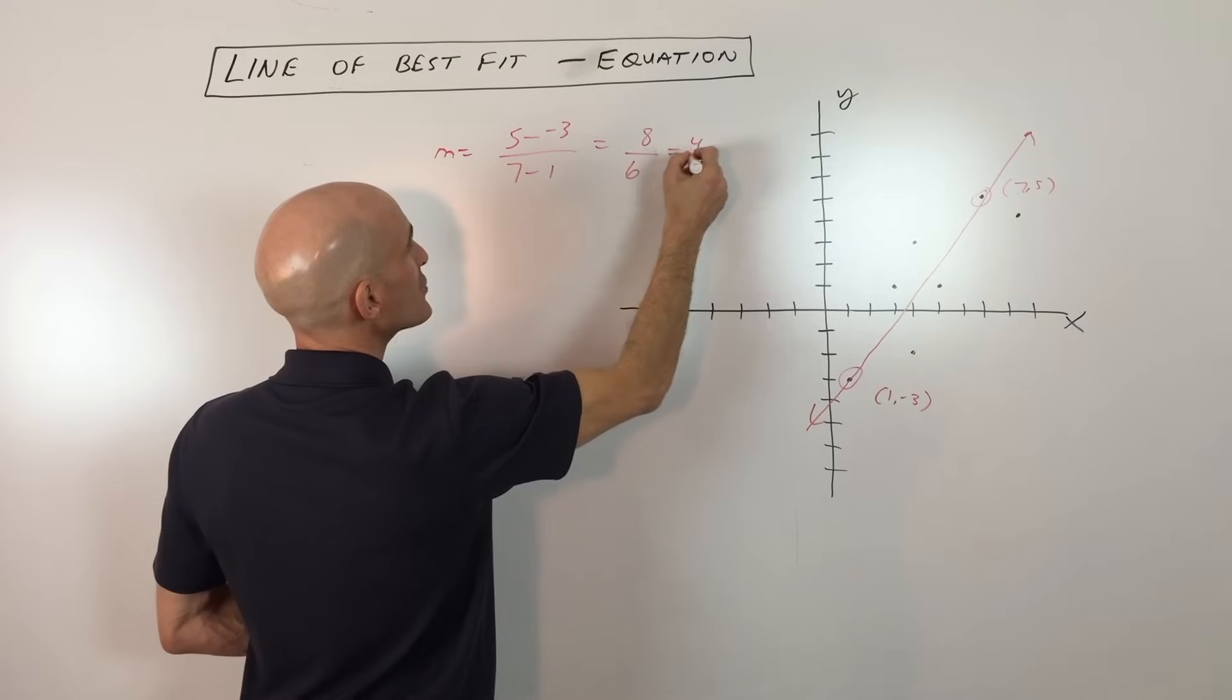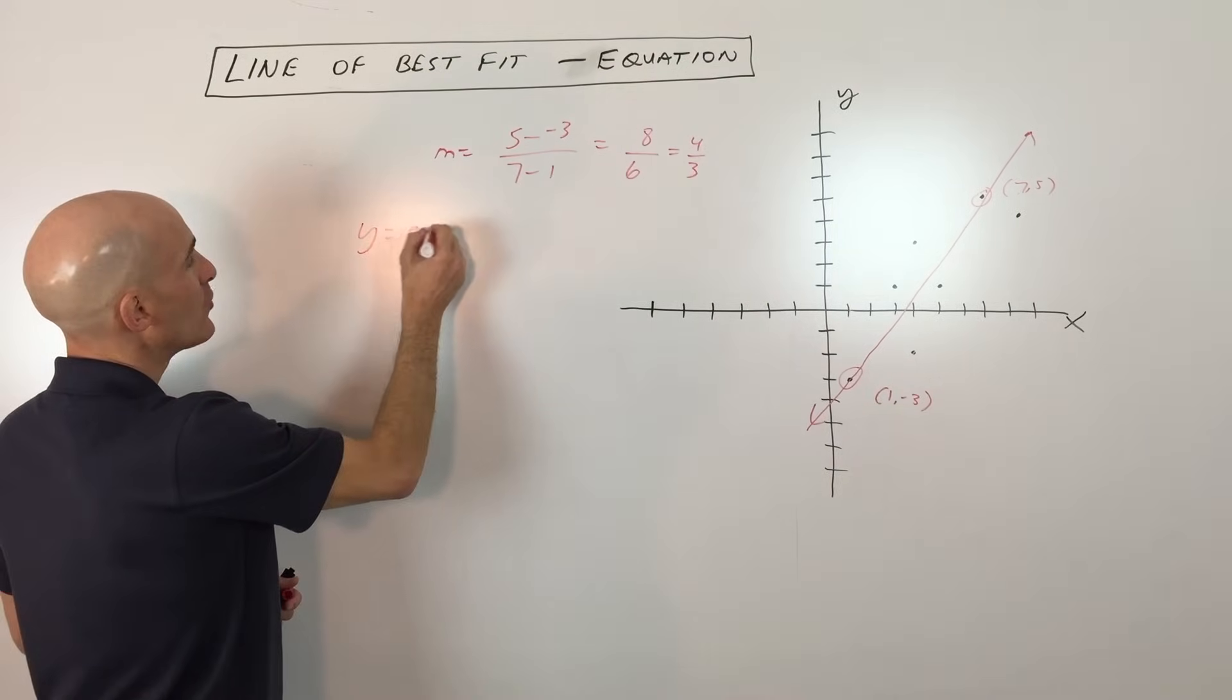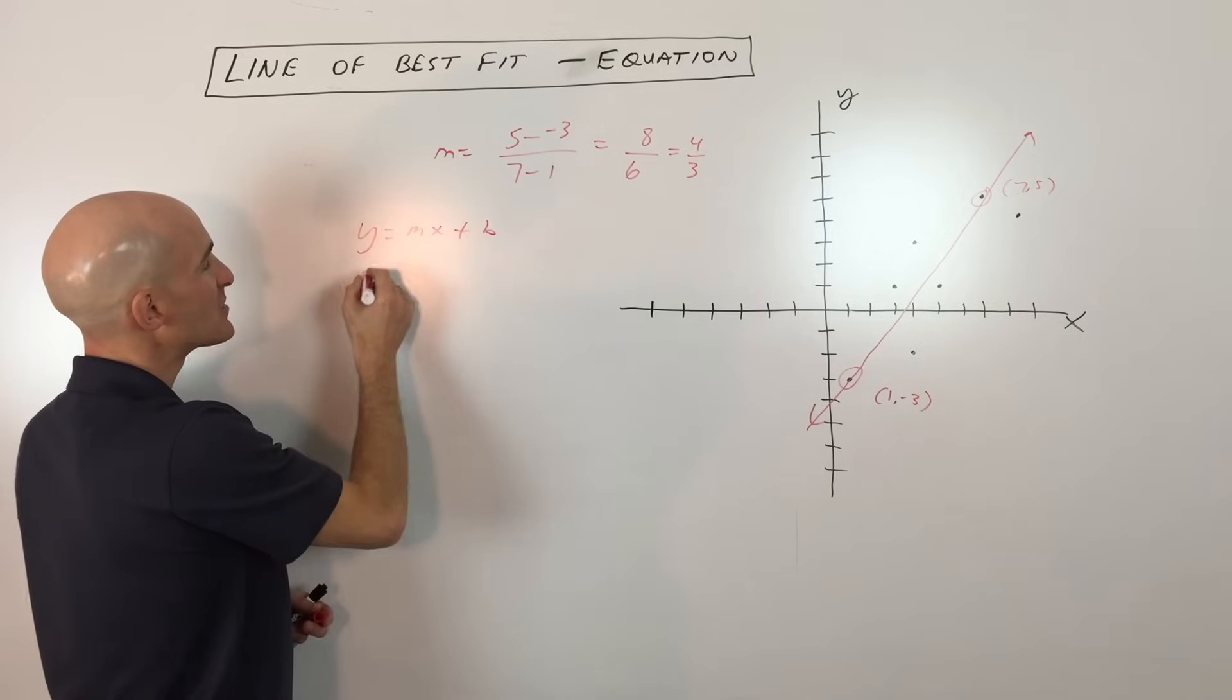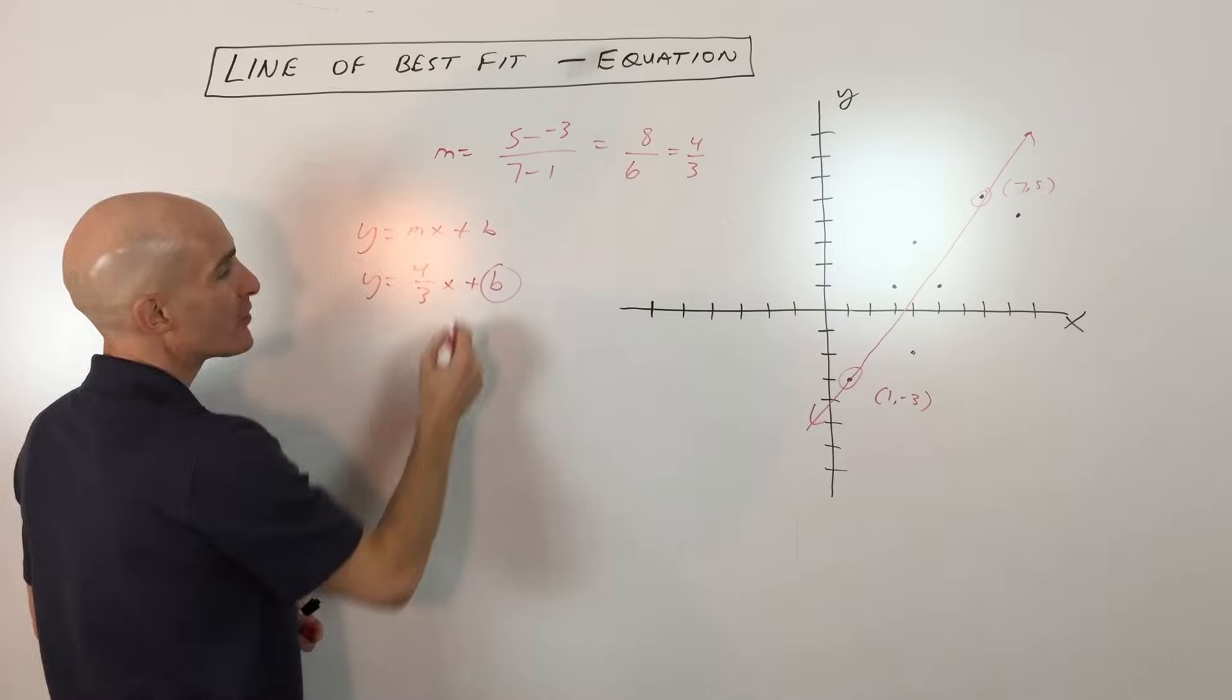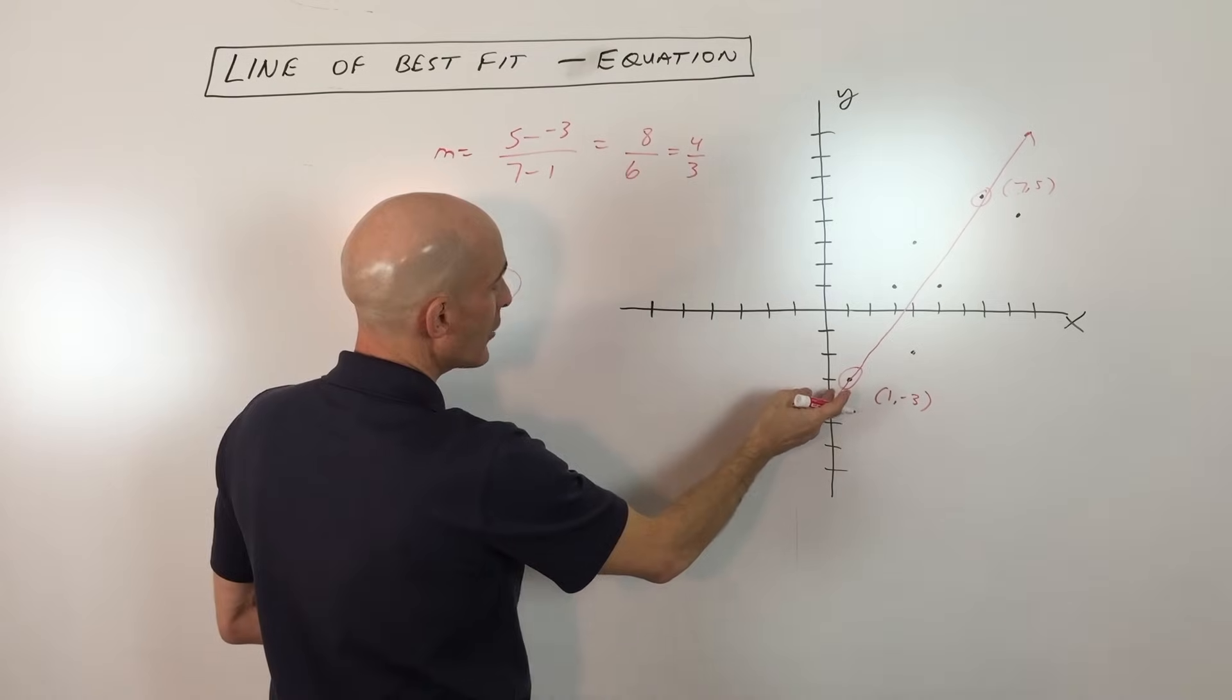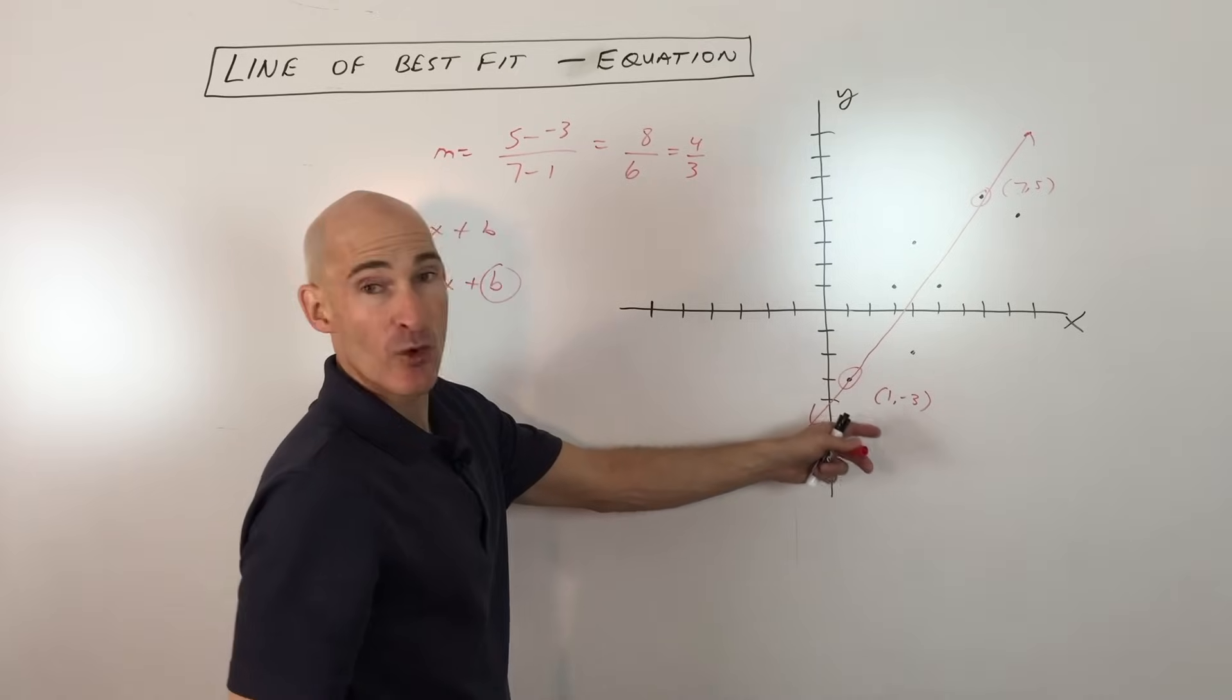Okay now what we're going to do is we're going to use our slope intercept form of the line y equals mx plus b. We know that the slope is four thirds, that's what we just calculated, but we don't know what the y-intercept is, the b value. It looks like it's crossing at negative four but let's try to get a little bit more exact